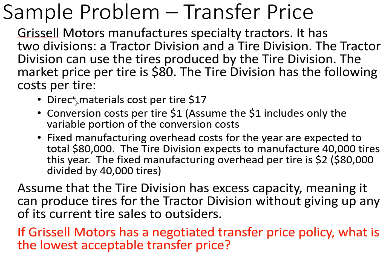The tire division has the following cost per tire. Direct materials cost is $17. Conversion costs per tire are $1 — conversion costs include direct labor and manufacturing overhead — and this $1 includes only the variable portion. Fixed manufacturing overhead costs for the year are expected to be $80,000. The tire division expects to manufacture 40,000 tires this year, making the fixed manufacturing overhead cost $2 per tire ($80,000 divided by 40,000 tires).